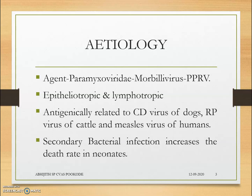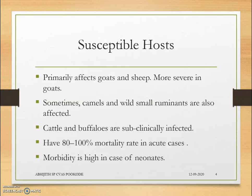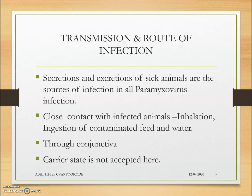PPR virus is antigenically related to the CDV virus of dogs, RPV of cattle, and measles virus of humans. Secondary bacterial infection increases the death rate in neonates due to pneumonia formation. The primarily susceptible hosts are goats and sheep, most severe in goats. Sometimes camels and wild small ruminants are also affected. Cattle and buffalo can get infection but show only subclinical infection with no clinical signs.